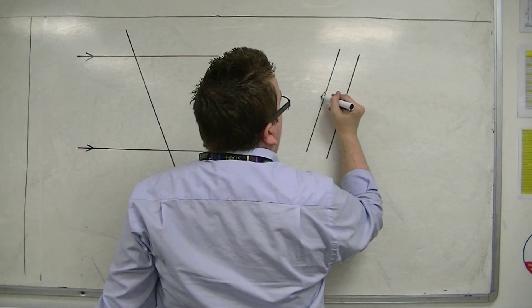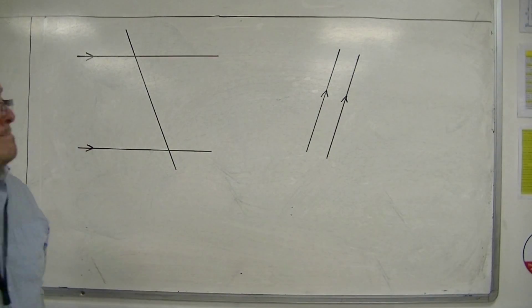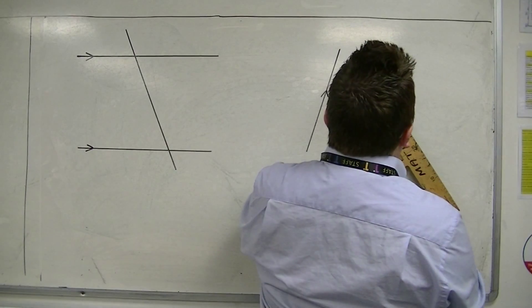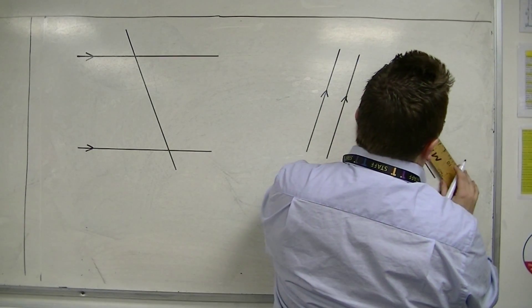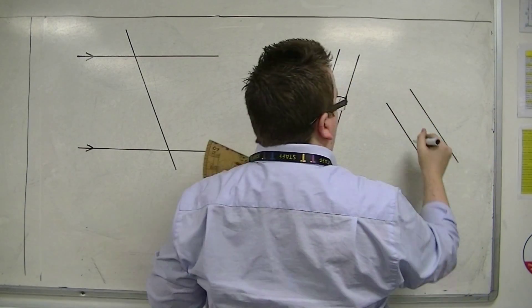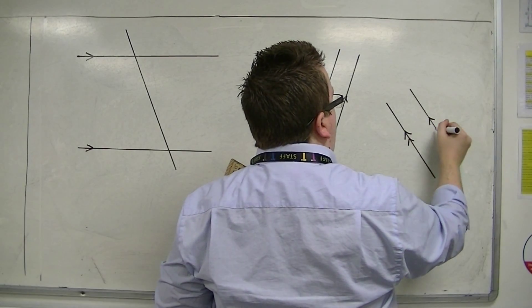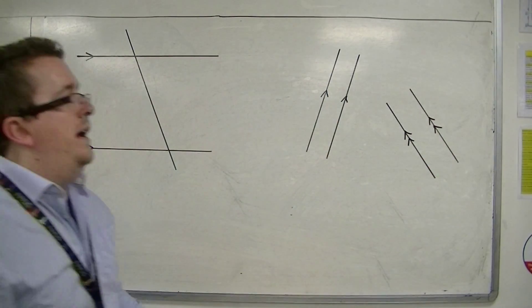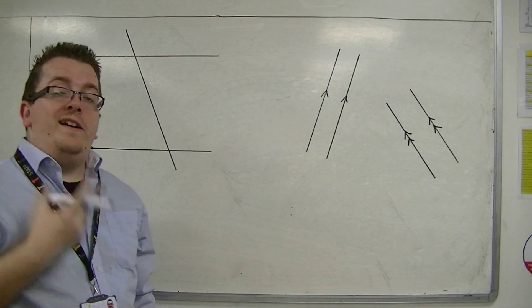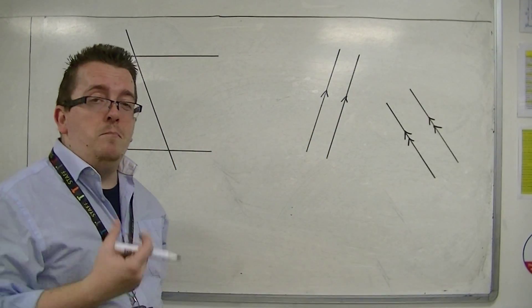And we represent them using little arrows. Now, that also means that I can have another pair of parallel lines over here. And if I want to say they're parallel as well, I need to get another pair of arrows on them. Essentially, the arrows are used as an identifying mark.